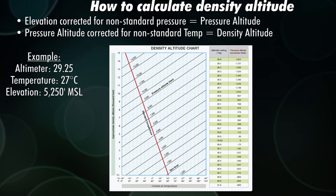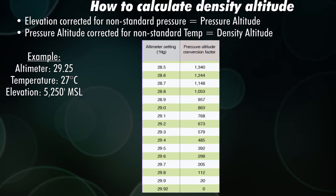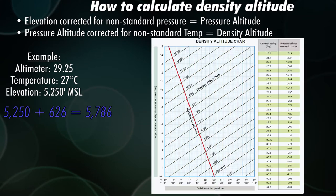So the way this chart works, on the right hand side you can correct for your non-standard altimeter. In other words, if it's not 29.92 outside, you need to correct for non-standard pressure. Our altimeter is right between 29.2 and 29.3, so if we work out the little interpolation there, that's 626 feet that you have to add to your elevation to get your pressure altitude.